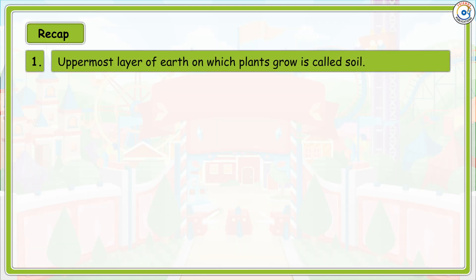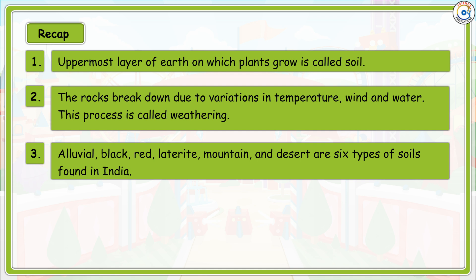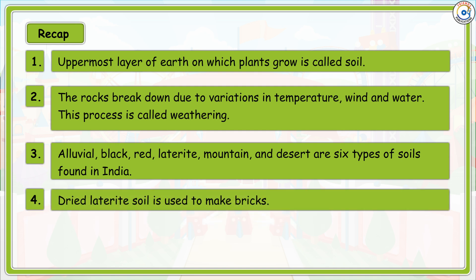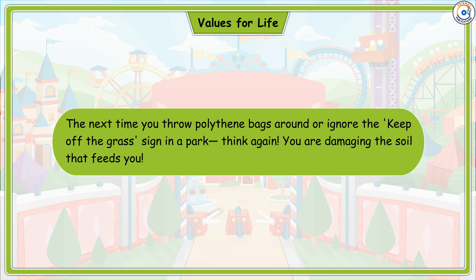Recap: The uppermost layer of earth on which plants grow is called soil. The breaking down of rocks due to variations in temperature, wind, and water is called weathering. Alluvial, black, red, laterite, mountain, and desert are the six types of soils found in India. Dried laterite soil is used to make bricks. Sometimes the topsoil is carried away by wind or water — this is called soil erosion. The next time you throw polythene bags around or ignore 'keep off the grass' signs in a park, think again — you are damaging the soil that feeds you.